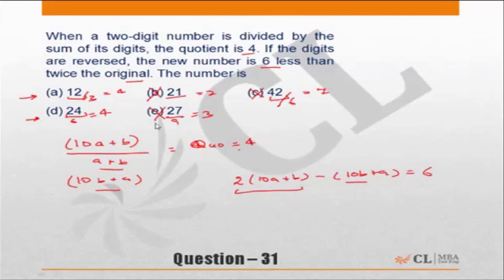Let's look at the second condition now. If the digits are reversed, if the digits are reversed, this becomes 21, this becomes 42. The new number is 6 less than twice the original.